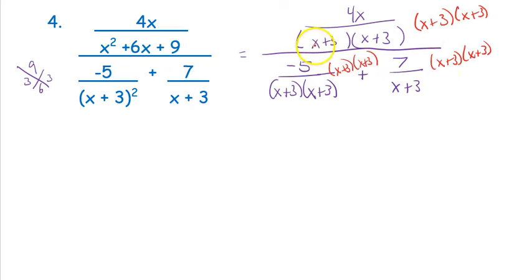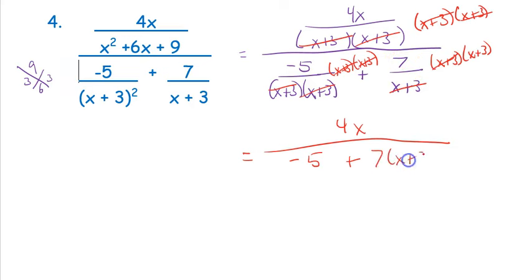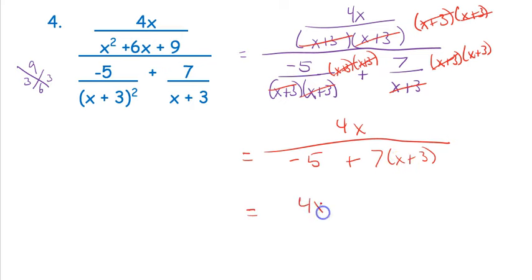My common denominator is clearly (x + 3)(x + 3). Once I have everything multiplied, I can cancel: both (x + 3)'s cancel on top leaving 4x; both cancel on the bottom with the −5; and just one (x + 3) cancels here, leaving 7 times (x + 3). Again, I'd prefer you stop here so I can check your work. If you do distribute, you should get 4x over (7x + 16).